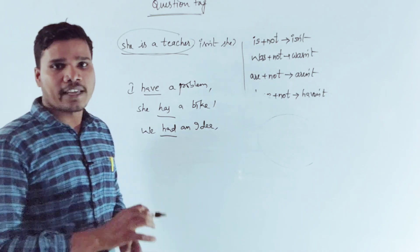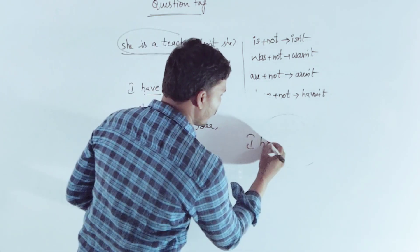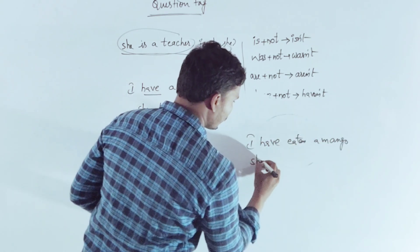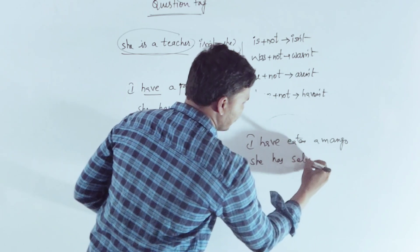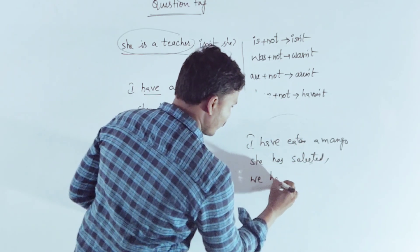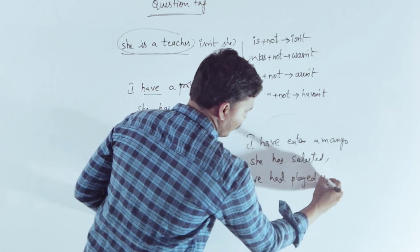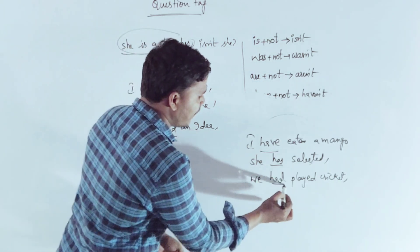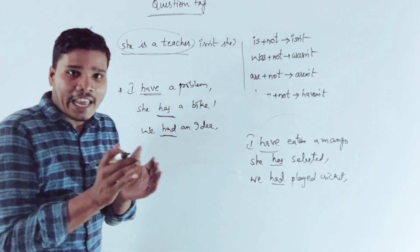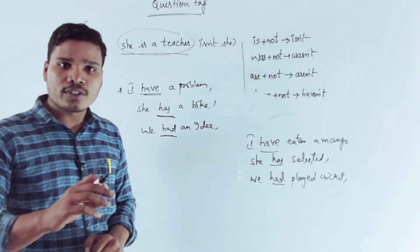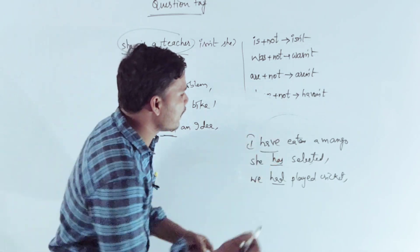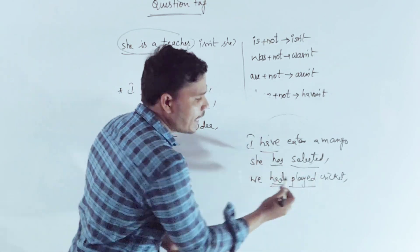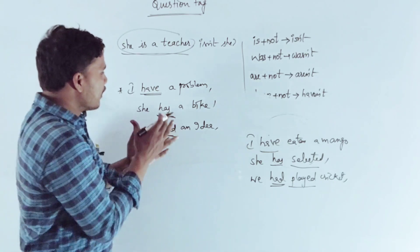'I have eaten a mango.' 'She has selected.' 'We had played cricket.' Here, have, has, and had are helping verbs — they help the main verbs 'eaten,' 'selected,' and 'played.' So have-forms can be either main verbs or helping verbs.